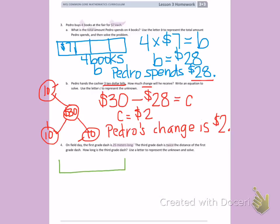So if I have a tape diagram, the first grade dash is 25 meters, but the third grade dash is twice as long. I'm going to use the letter T to represent my unknown.